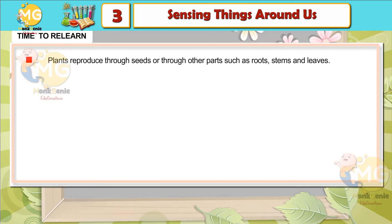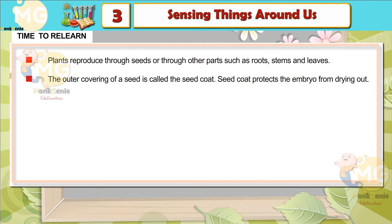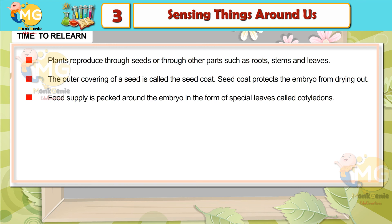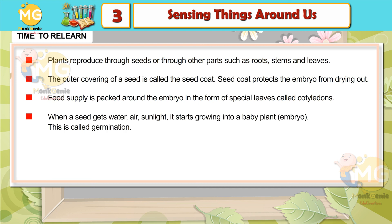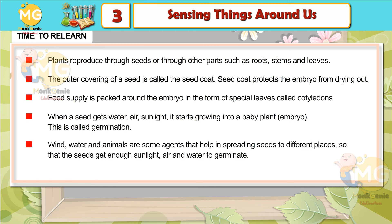Time to review: plants reproduce through seeds or through other parts such as roots, stems, and leaves. The outer covering of a seed is called the seed coat, which protects the embryo from drying out. Food supply is packed around the embryo in the form of special leaves called cotyledons. When a seed gets water, air, and sunlight, it starts growing into a baby plant — this is called germination. Wind, water, and animals are some agents that help in spreading seeds to different places so that seeds get enough sunlight, air, and water to germinate.